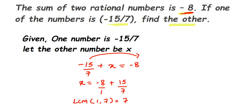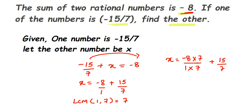So X equals — we need to make the denominator 1 equal to 7. We multiply -8/1 by 7/7: what we multiply in the denominator, we also multiply in the numerator. For the second number, we already have 7 in the denominator, so nothing changes there.